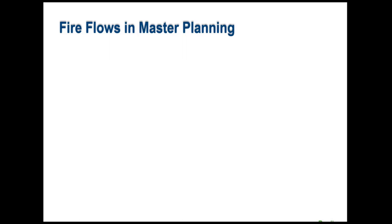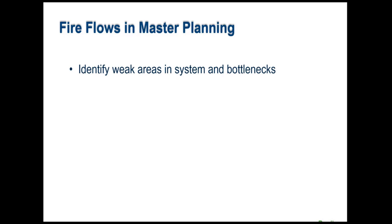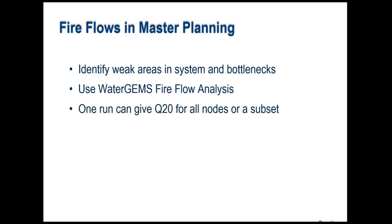The first use case is using fire flows in master planning. The idea is to find the weak areas in your system and the bottlenecks causing weakness. WaterGEMS's fire flow analysis is very useful here — in one run it can give you the available fire flow at 20 psi or some other residual pressure for all the nodes in your system or a subset. It's generally based on the assumption that the supply is good and that the number of hydrants to get water out of the system is good, so it's essentially looking at the distribution system capacity for fire flow protection.